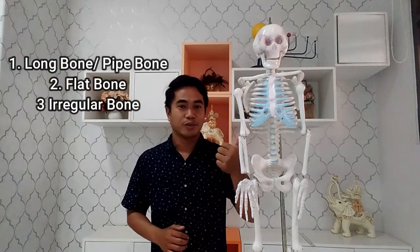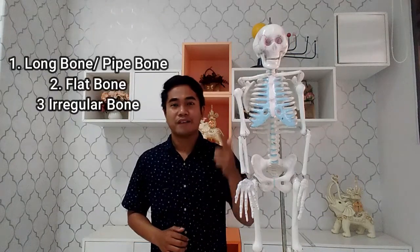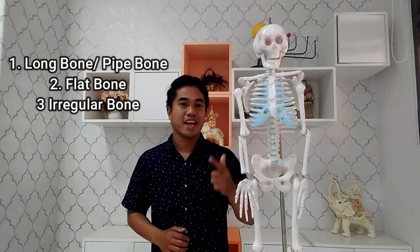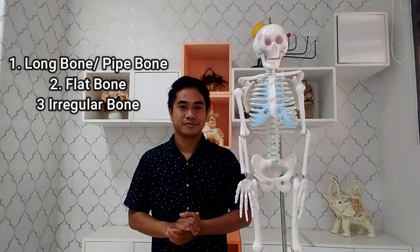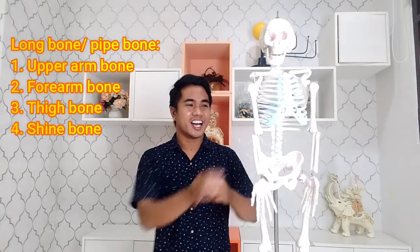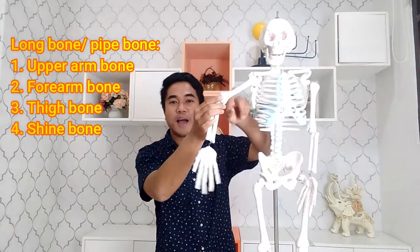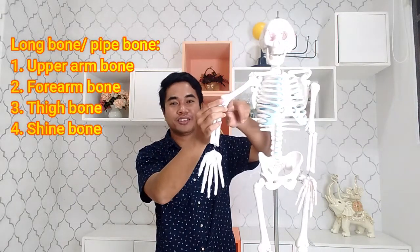Each bone has different size and different shape. There are three types of bones: long bone, flat bone, and irregular bones. The examples of long bones are upper arm bone, or humerus, forearm bone, or radius and ulna, thigh bone, and shin bone.